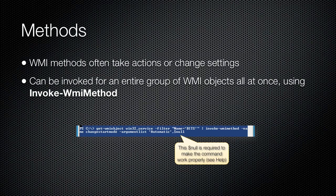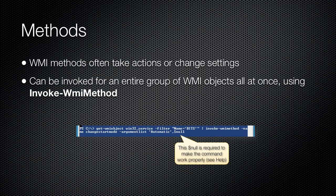You can run this cmdlet by itself, specifying a class, namespace, computer name, credential, and other parameters such as you would when using Get-WMIObject. In addition, you can specify the name of the method to invoke and provide any parameters. You can also retrieve WMI objects by using Get-WMIObject, and then pipe those objects to Invoke-WMIMethod. When you use this technique, you only need to provide the method name and arguments, since the WMI objects themselves will provide the rest of what Invoke-WMIMethod requires.